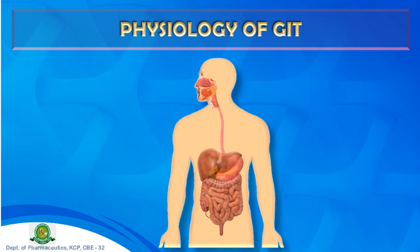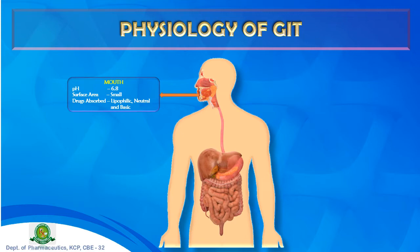The major functional components of the GIT are the mouth, stomach, small intestine (duodenum, jejunum, ileum), and large intestine (colon). Each differs in anatomy, function, secretion, and pH. The mouth has a pH of about 6.8 and a small surface area. Lipophilic, neutral, and basic drugs absorb here directly into systemic circulation via buccal mucosa, bypassing first-pass metabolism, achieving nearly 100% bioavailability.